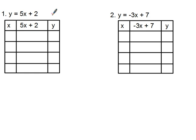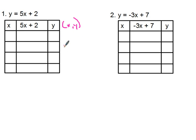Now we can do something called a function table. A function table always has an x column, an equation column, and a y column. Today we're learning to create these function tables. Later we'll add an ordered pairs column — the x-comma-y column — and use those to graph a point on a line.